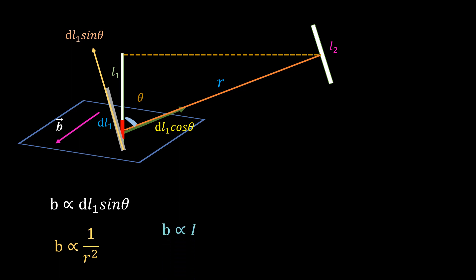Putting all these relations together, we have the following equation, where k is a constant of proportionality. This is the Biot-Savart law for gravitation.